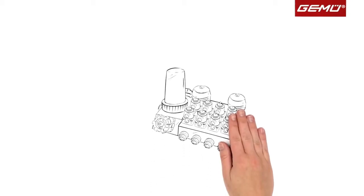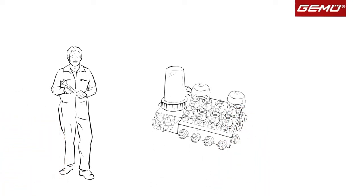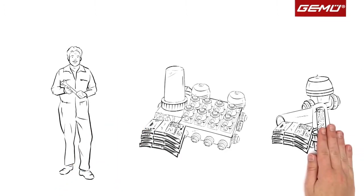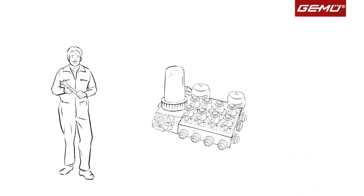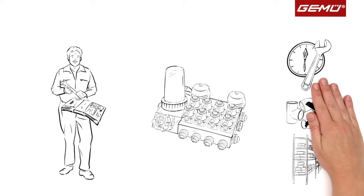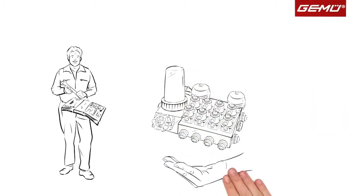And the valve blocks from GEMU are truly worthwhile for Mr. Jones. They're somewhat more expensive than valves, pipes, and process components. But Mr. Jones saves expensive assembly and installation time, consumables, and storage space, and receives everything from a single source.